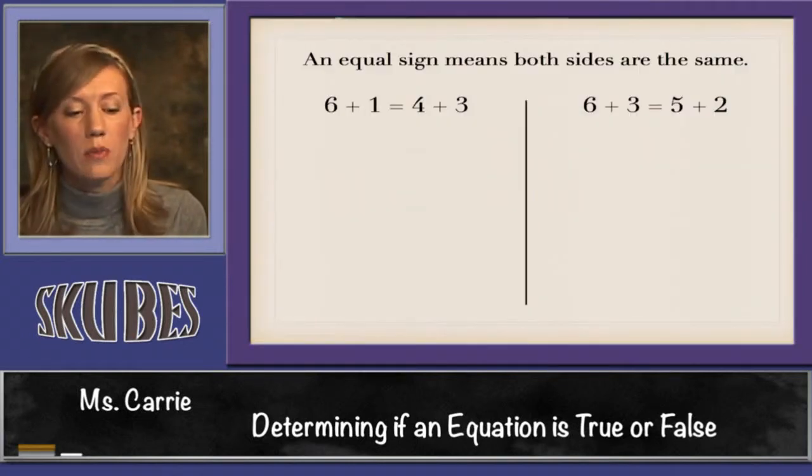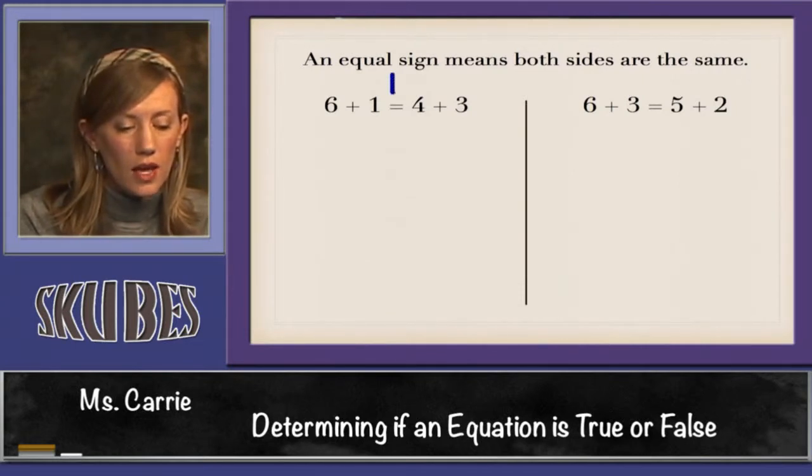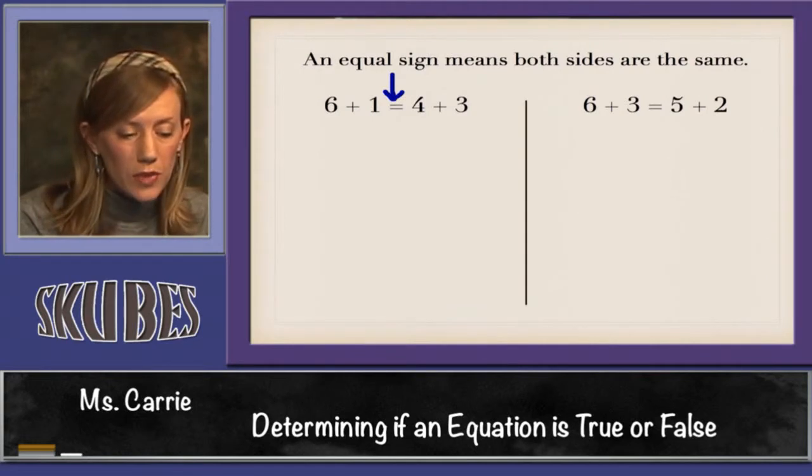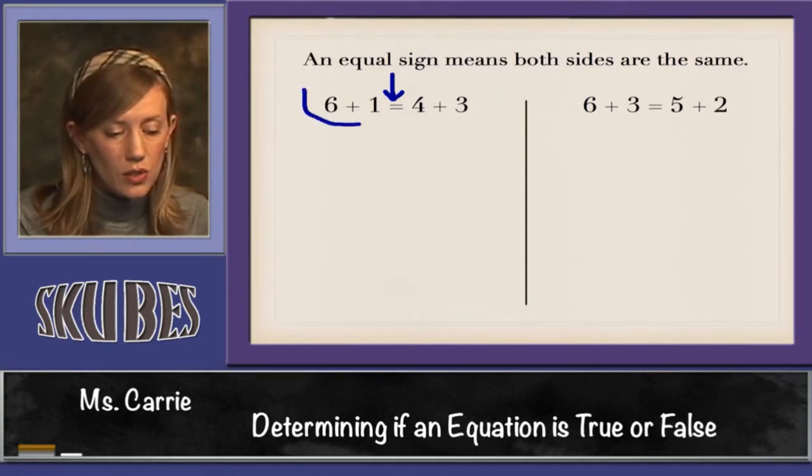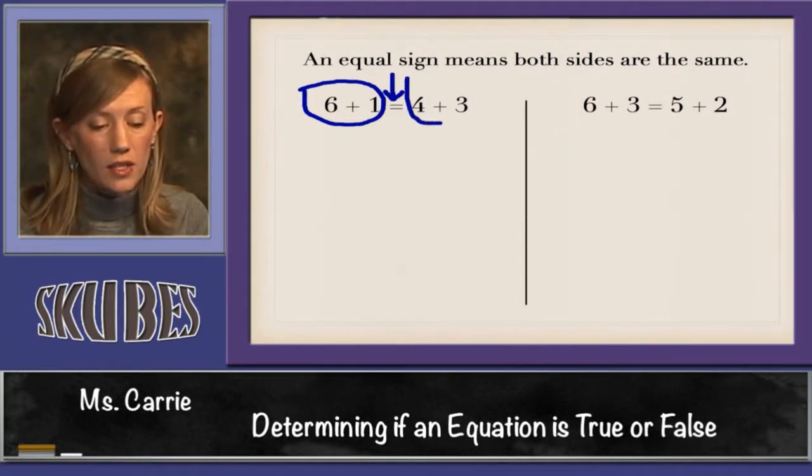An equal sign means both sides are the same. What we're doing here is looking at the equal sign, I'm going to draw an arrow to it right here, and determining if the answer to this equation is equal to or the same as the answer to this equation here.